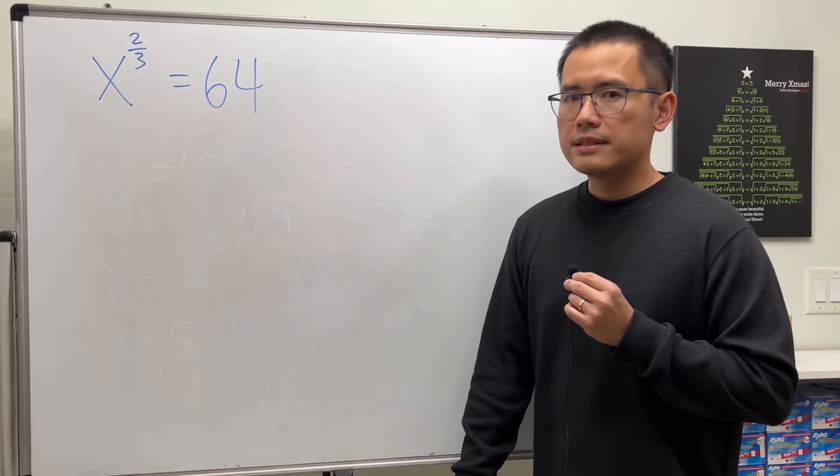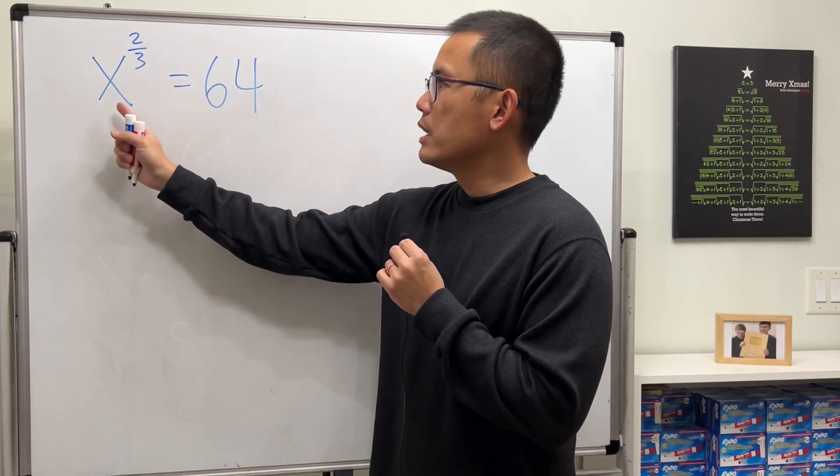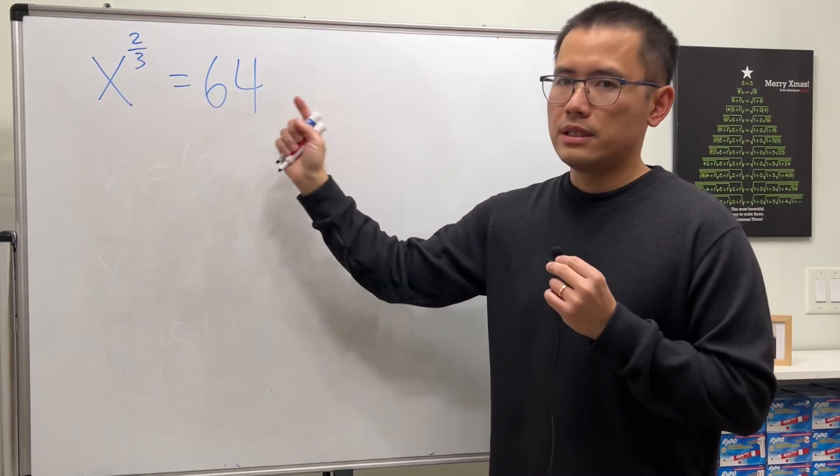So I want to talk about this equation with you guys. How do we solve an equation with a rational exponent? Here we have x to the 2 over 3 equals 64.